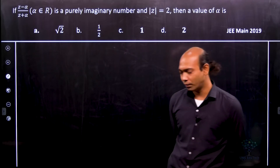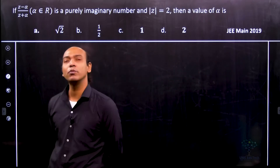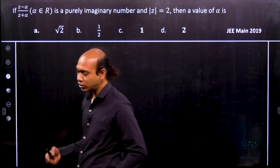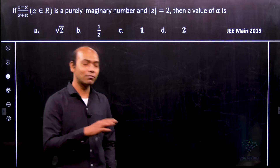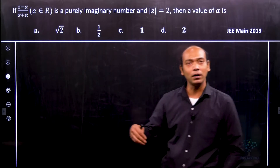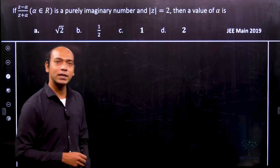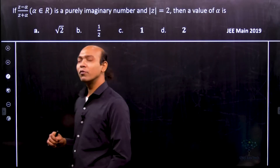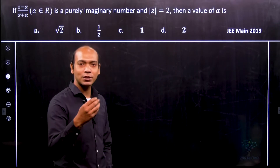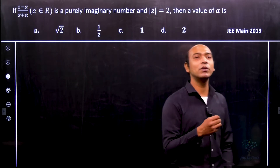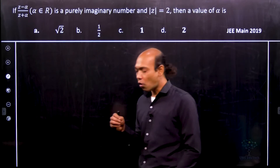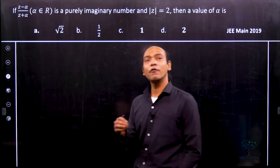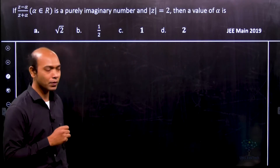One obvious method is to consider z equal to x plus iy, multiply by conjugates, separate the real and imaginary parts, and set the real part equal to zero. However, we won't use this approach because with JEE experience you know that substituting z = x + iy always makes the problem too lengthy, and in JEE we don't have that much time. So we'll use a different approach.